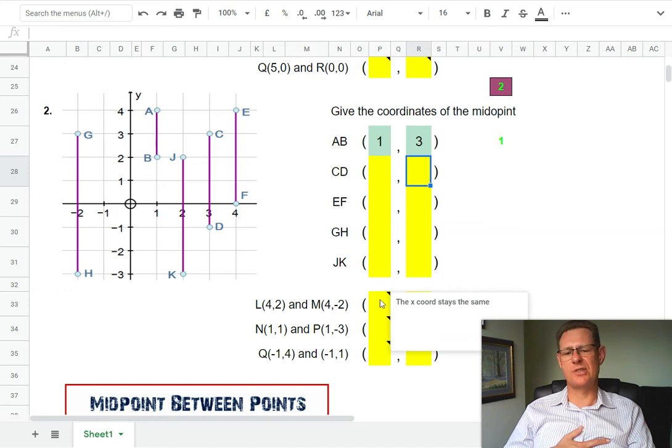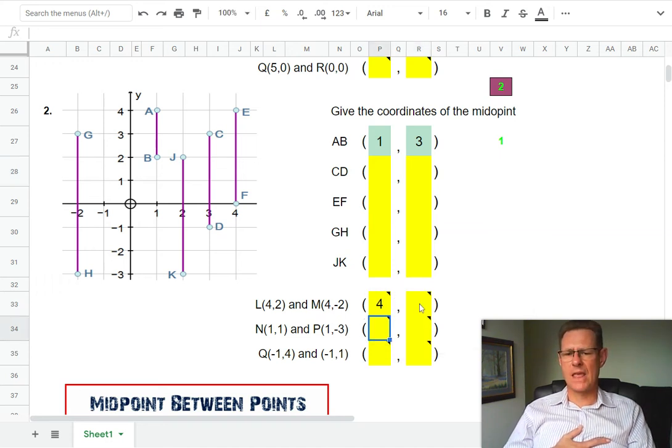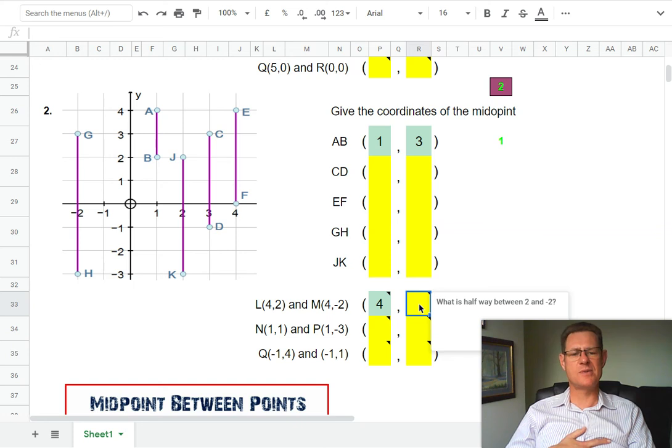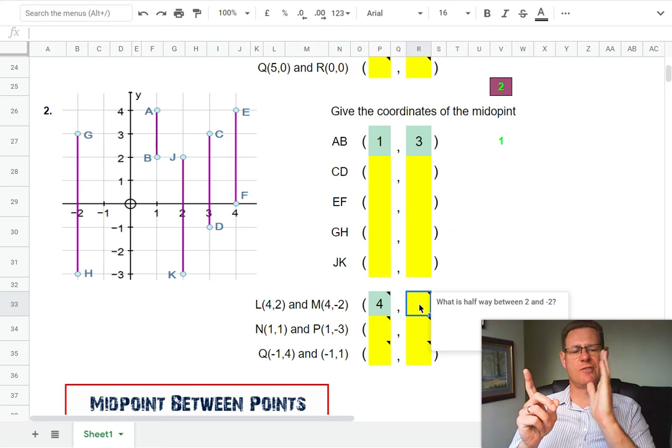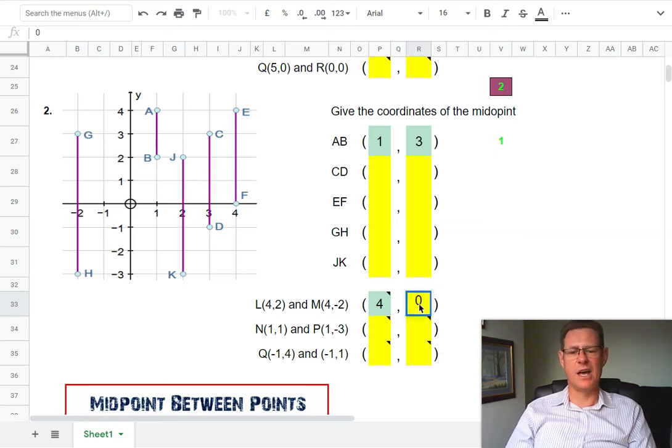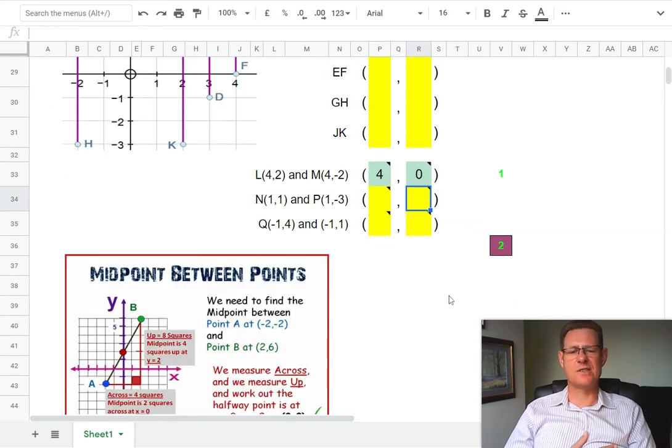Let's have a look at this one without a diagram. You can see the x coordinate four and four is staying the same, so that's going to go in here. If you look at the second values, the y coordinates, the hint is what is halfway between two and minus two—two on one side, minus two on the other. You've got zero right in the middle. You can also do the average: two plus minus two is nothing or zero, and half of zero gives you the answer.